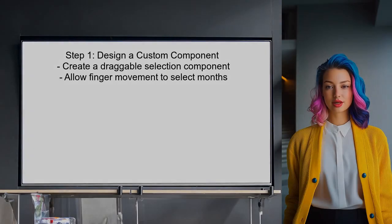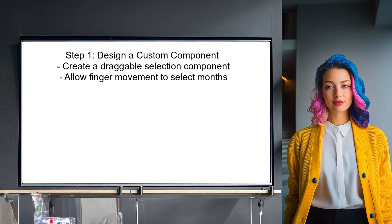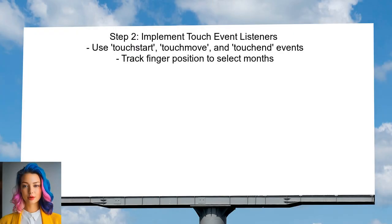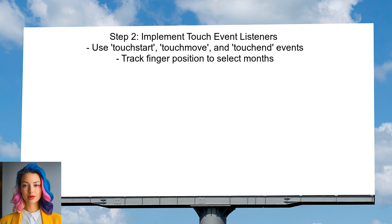To create a selection view similar to a rating bar for months, start by designing a custom component. This component will allow users to select a range of months by dragging their finger across the screen. Next, implement Touch Event Listeners. These listeners will track the user's finger movement and determine which months are selected based on the position of the finger.